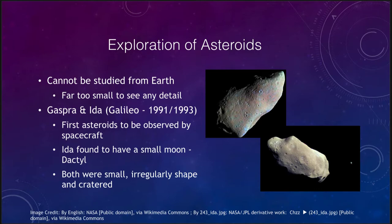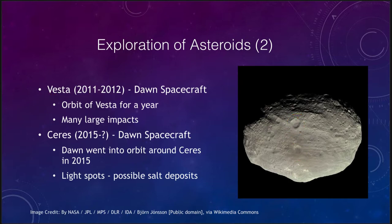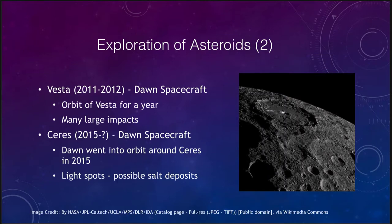We've continued to explore asteroids and have looked at others. Vesta was observed by the Dawn spacecraft, which was in orbit of Vesta for a year. It went into orbit, orbited around Vesta, and explored it. We see lots of large impacts — several very good-sized impacts, quite significant considering the size of this object. So we've had close-up looks at not only Vesta but also one of the dwarf planets, Ceres. Ceres was also explored by the Dawn spacecraft after it left Vesta, using its remaining fuel to travel there.